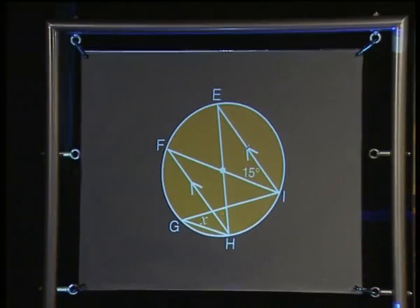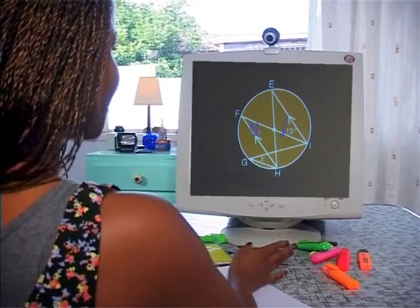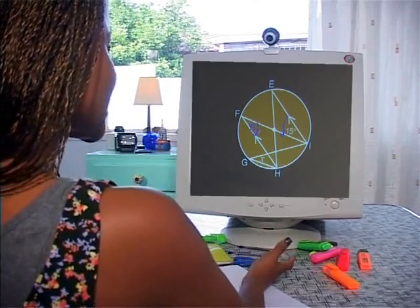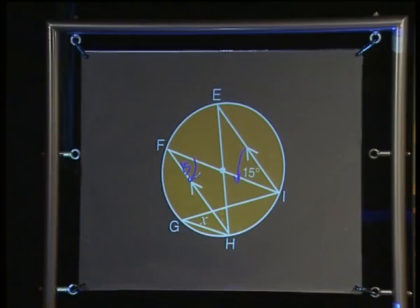We go back to John and Kanya for an application of the theory. Here you need to make use of parallel lines. If angle EIF is given as 15 degrees, how does this help us find X? Angle IFH is also 15 degrees because of alternate angles on parallel lines. And IFH and IGH are angles in the same segment, both subtended by arc HI.